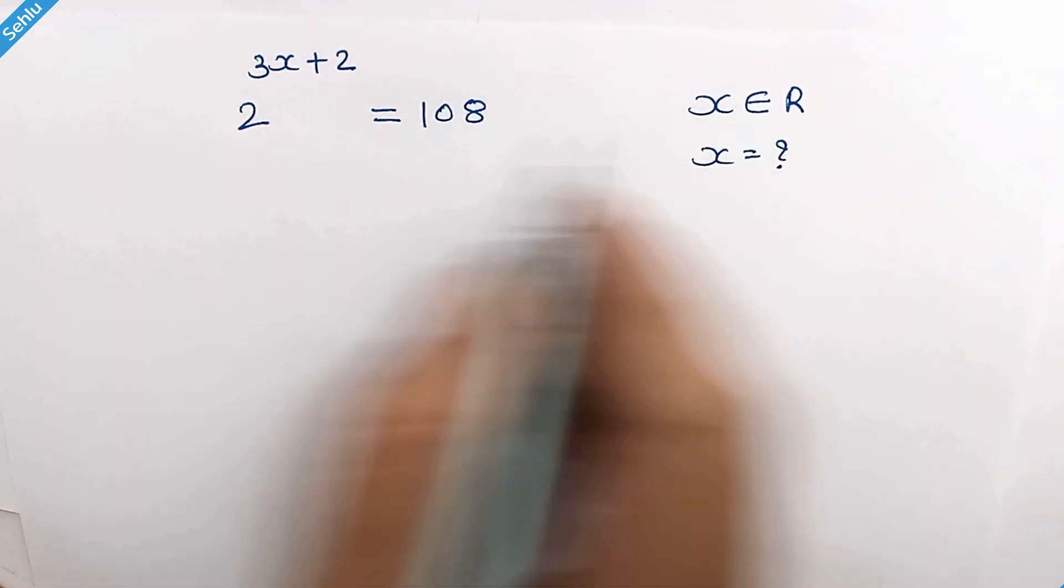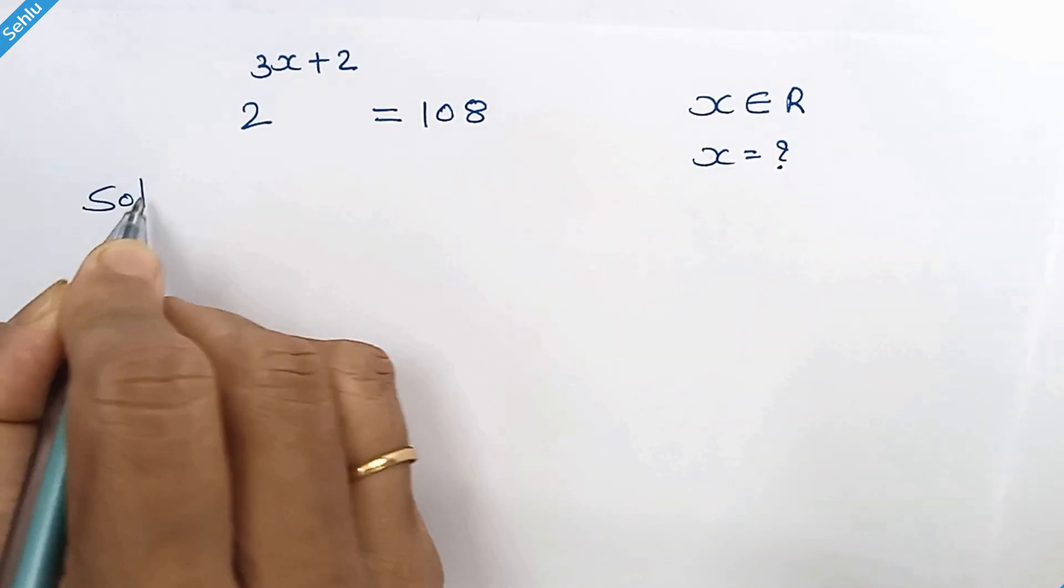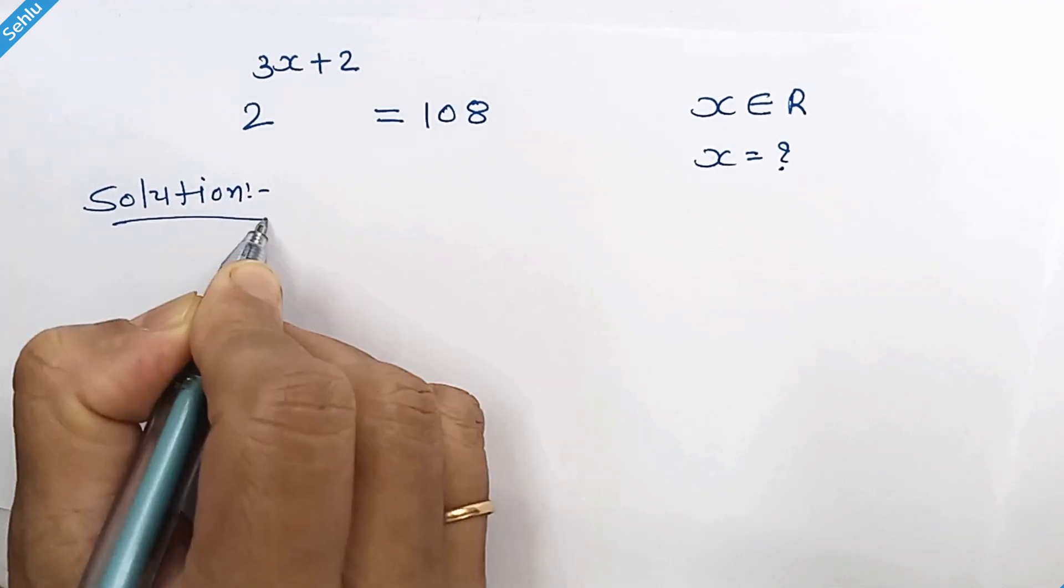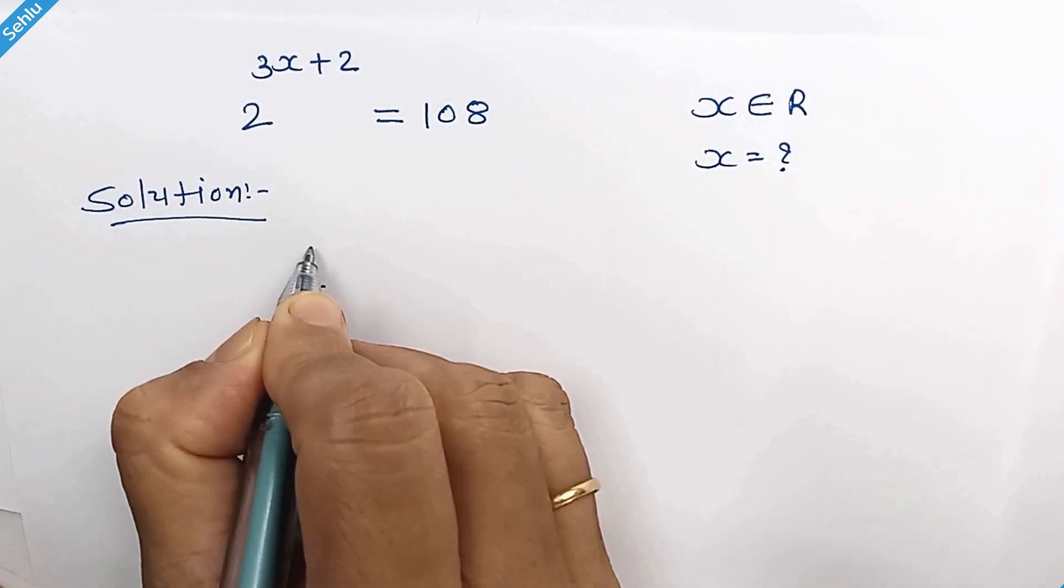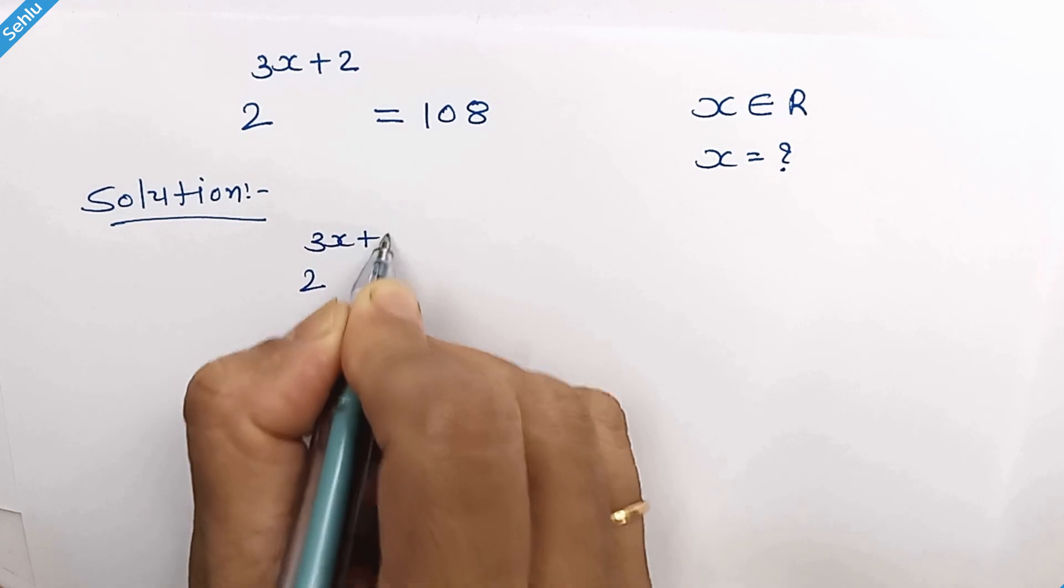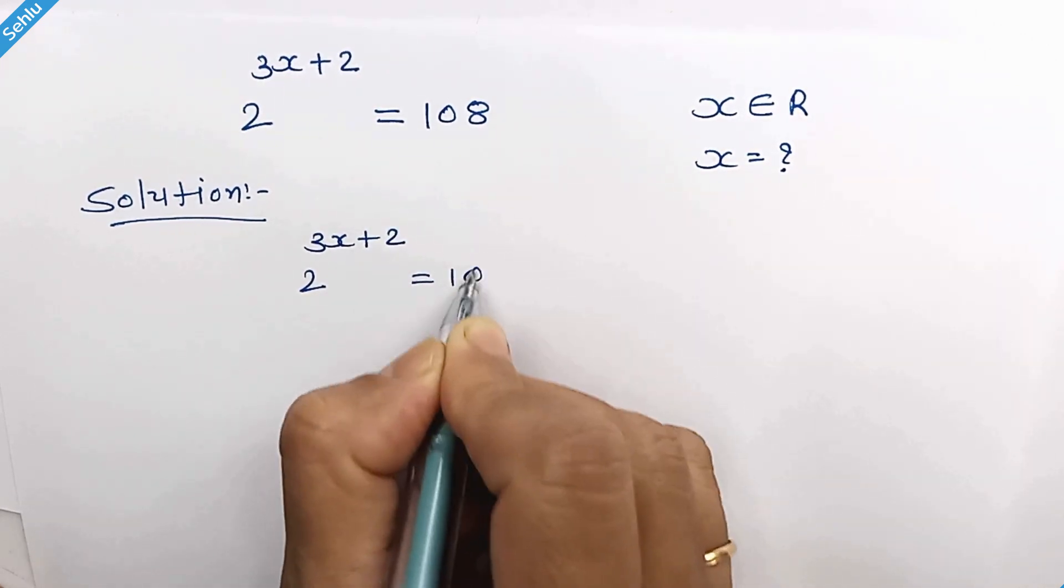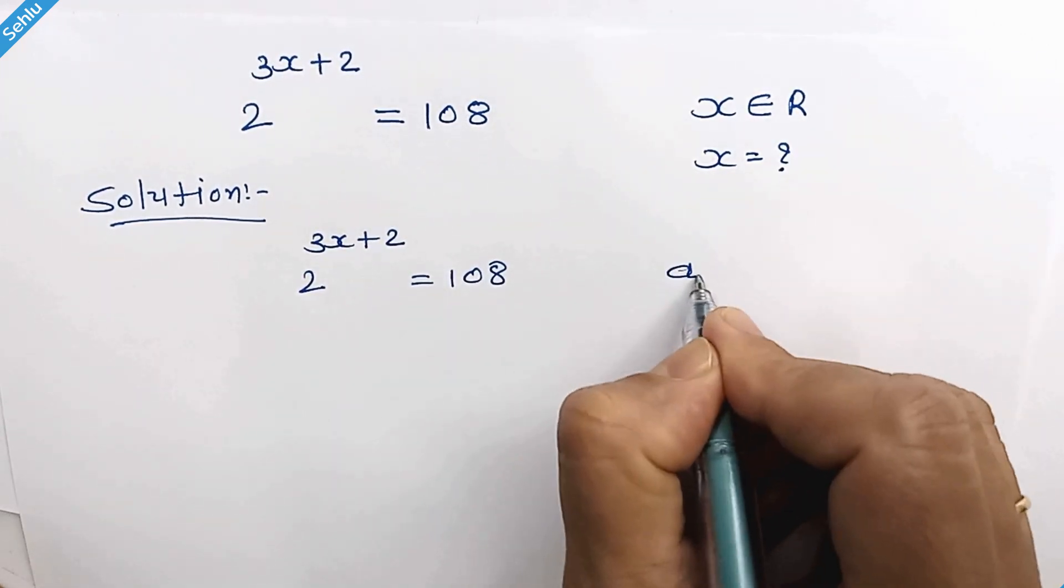Hello friends, let's find the real value of x. The question is 2 to the power 3x plus 2 is equal to 108. When we have a to the power b plus c, then it can be a to the power b times a to the power c.